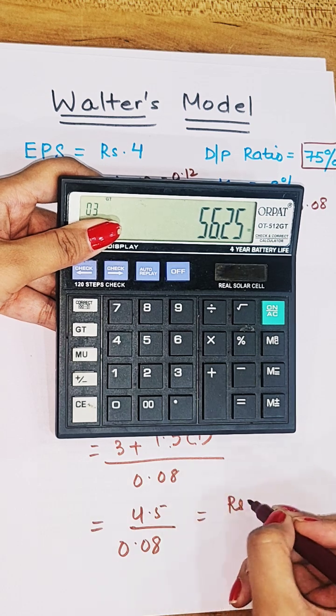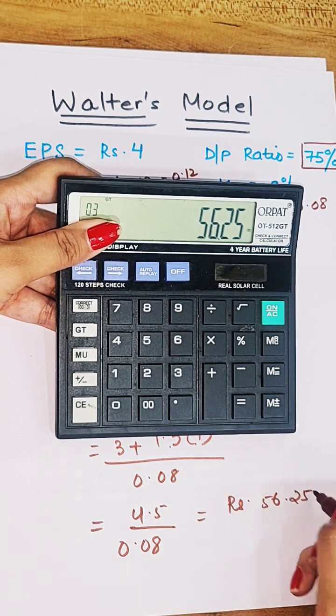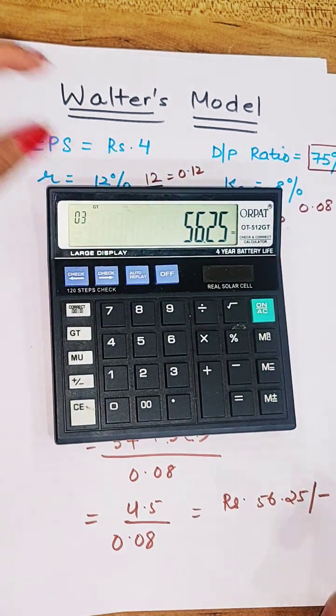4.5 by 0.08, we get value of P as 56.25 rupees.